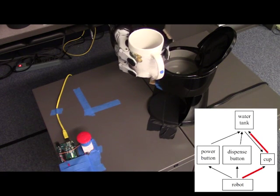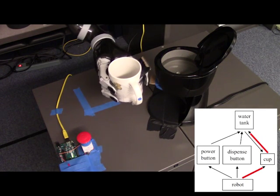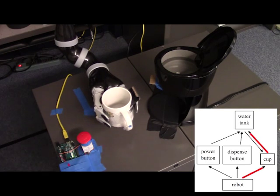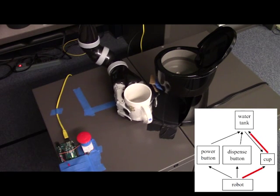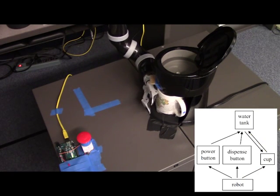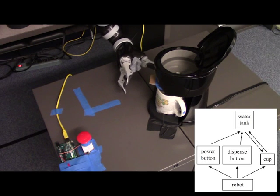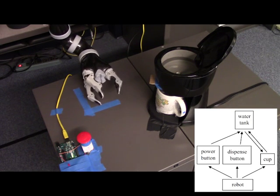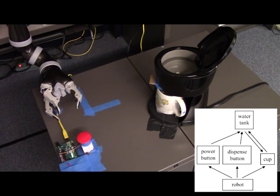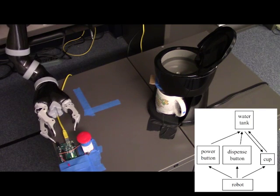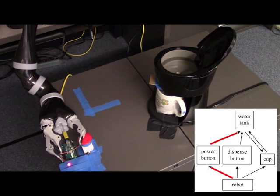After putting the cup below the dispenser, which allows the dispenser to influence the cup, the robot presses the dispense button and fills the cup with water. Notice that the interaction between the cup and the tank changes direction during filling. Finally, it interacts with the cup again to retrieve it from under the dispenser.